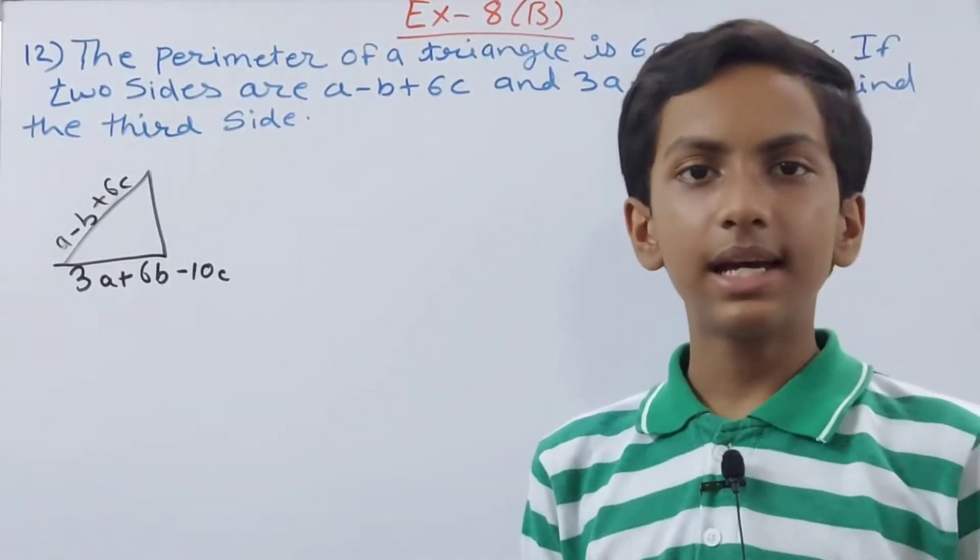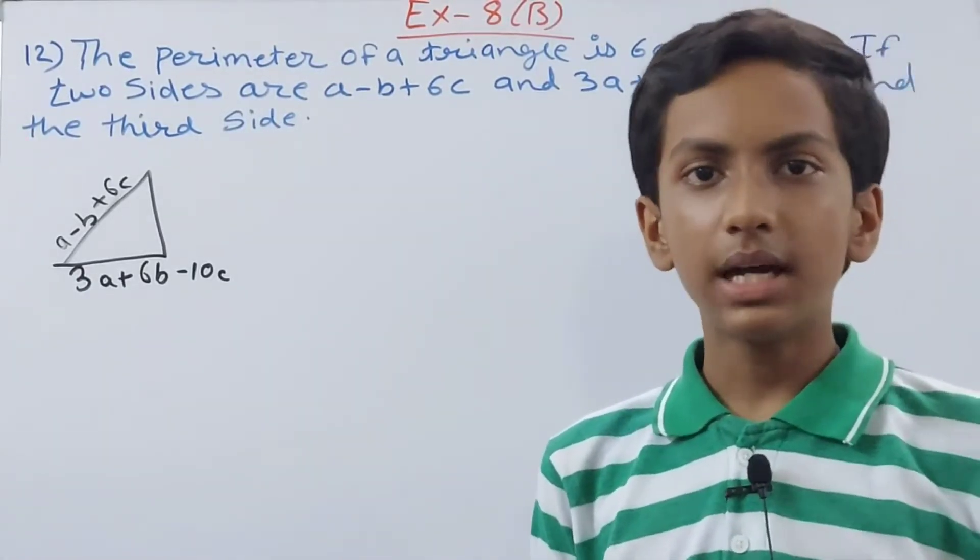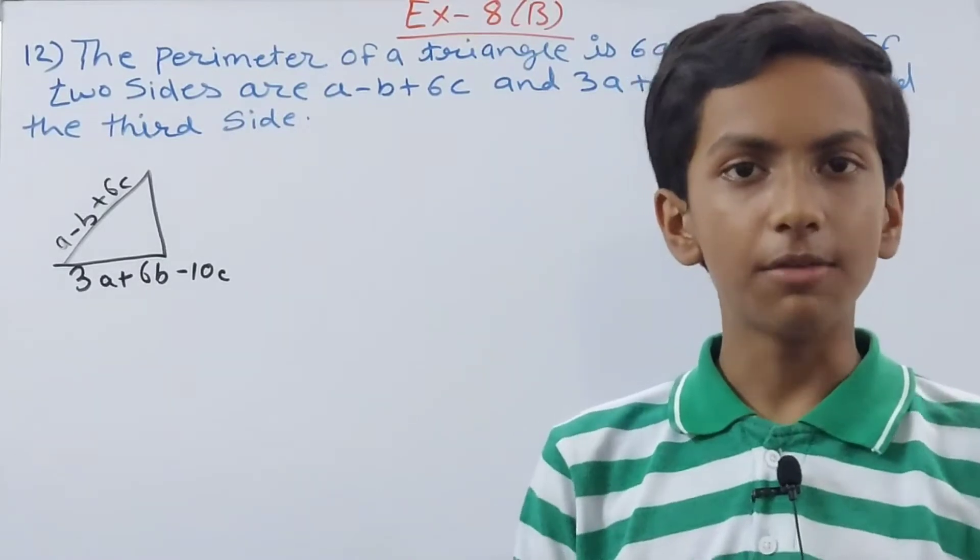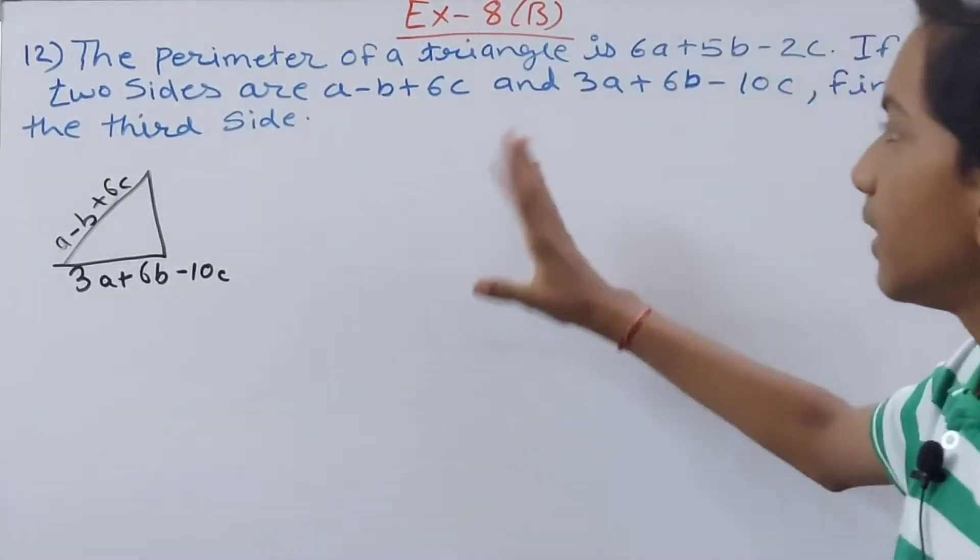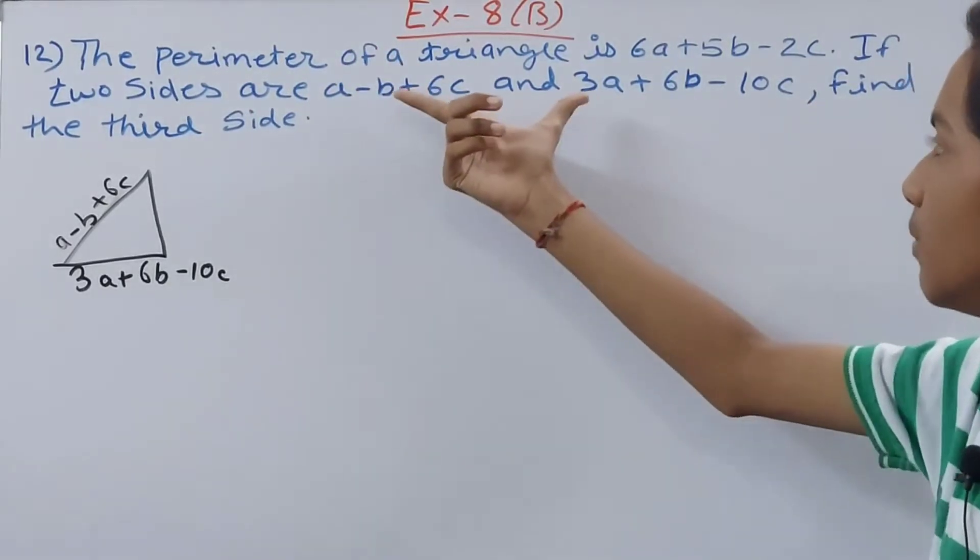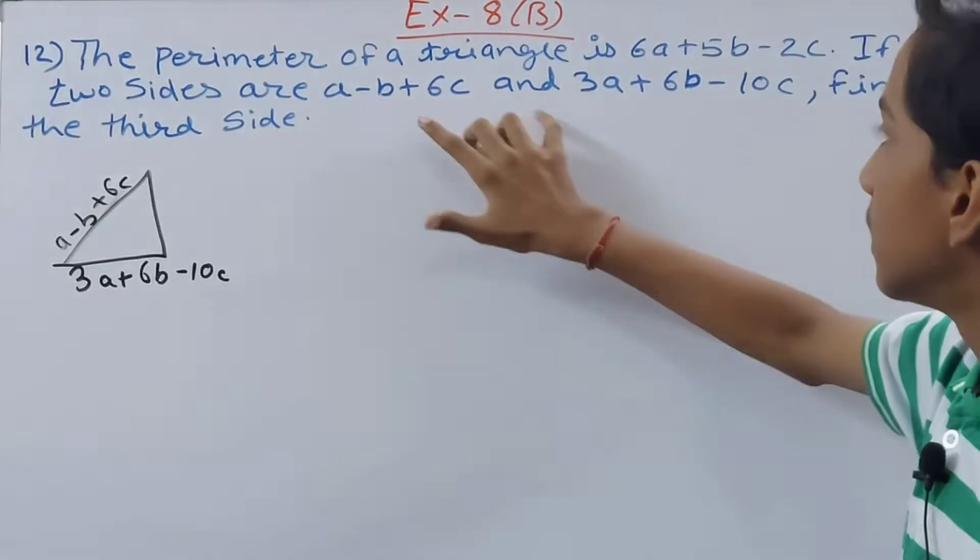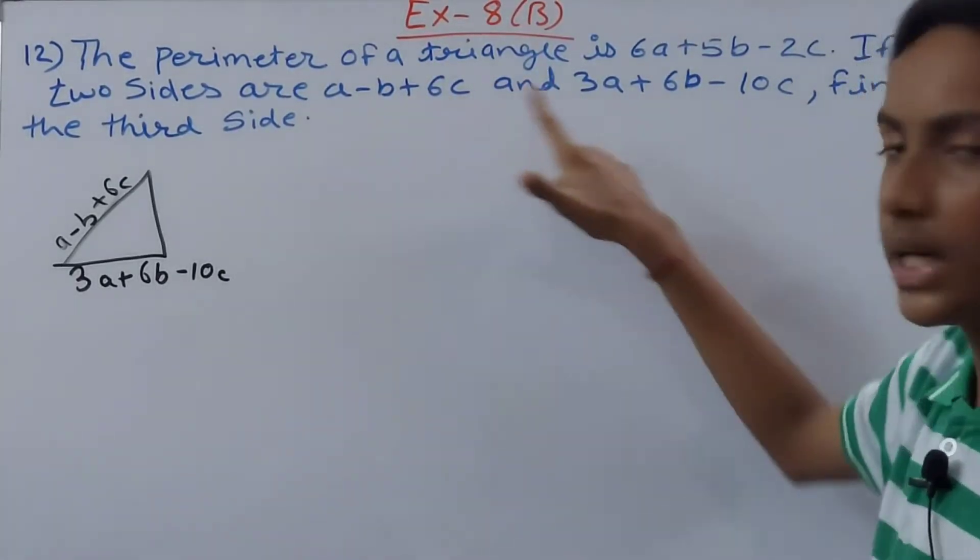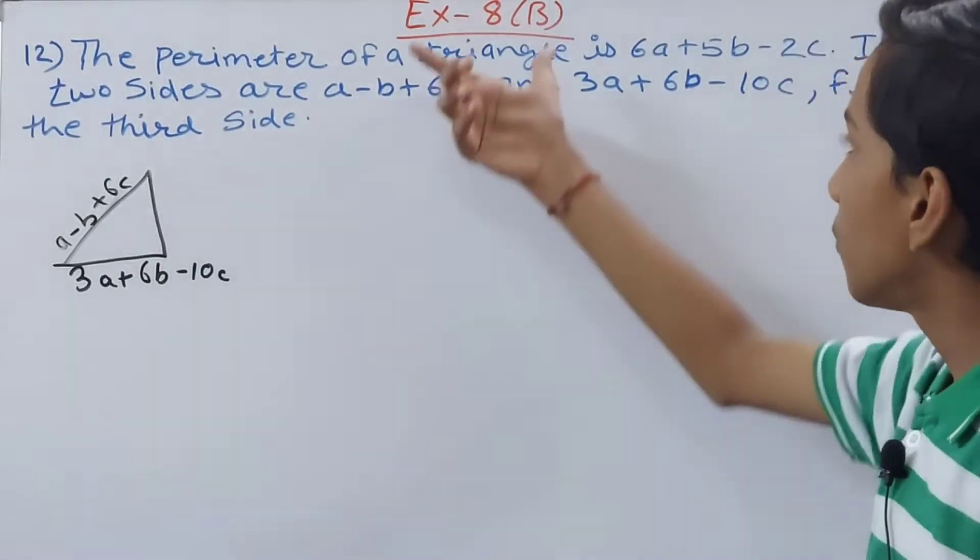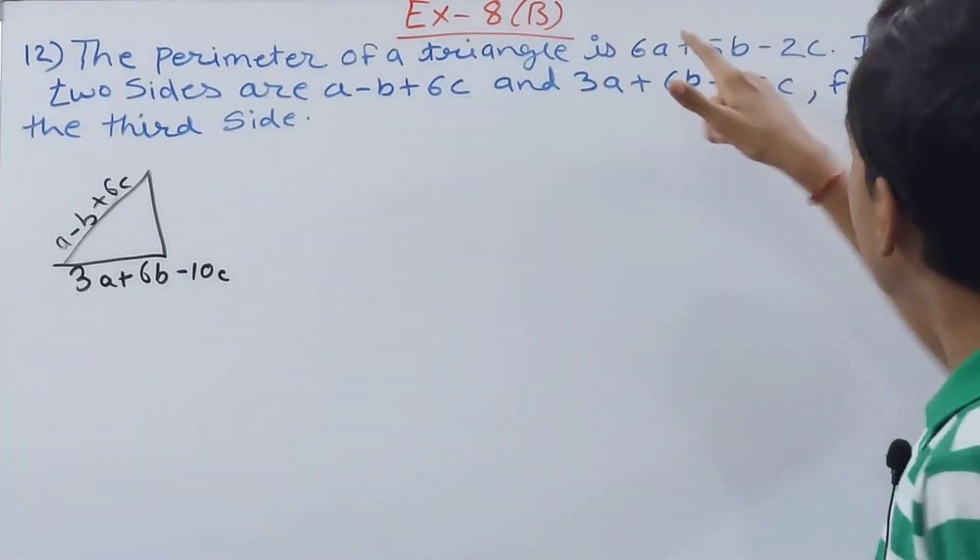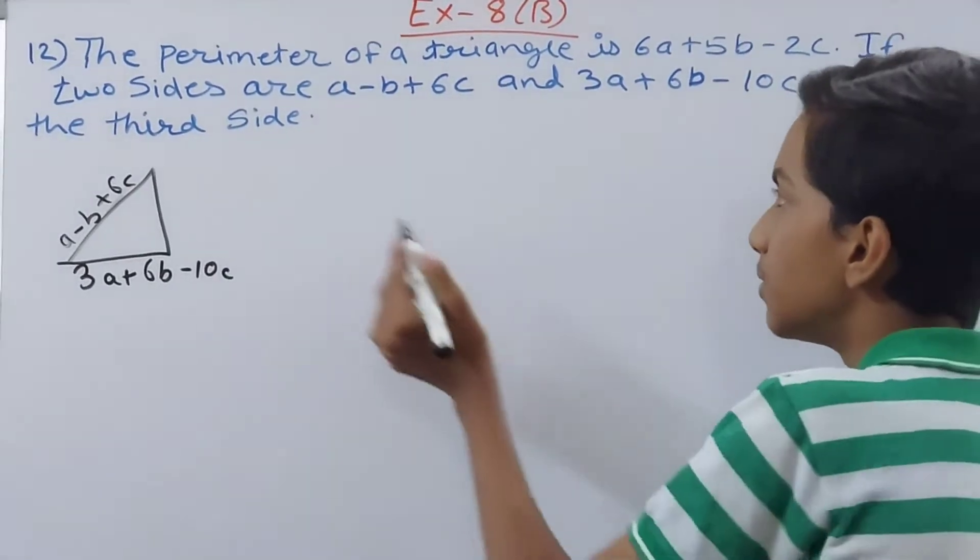Then 15 we will subtract from the perimeter, so that is 20. 20 - 15 = 5. So this is how we get the third side. Same here also. First we sum up the length of these two sides. Once we have got the sum, that sum we will subtract from the perimeter of the triangle, which is 6a + 5b - 2c.